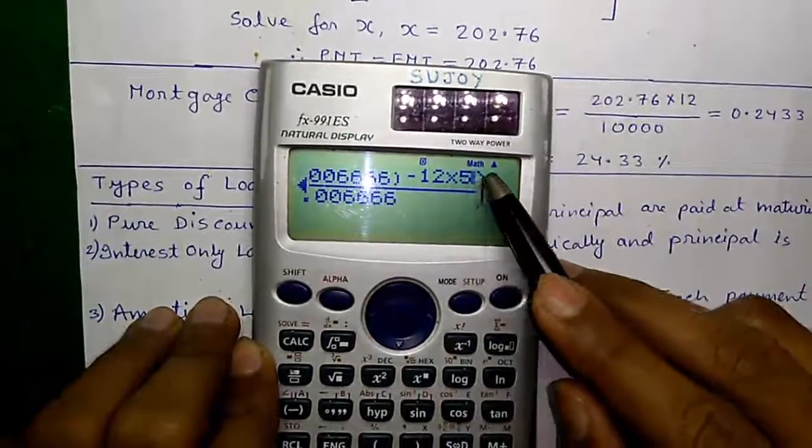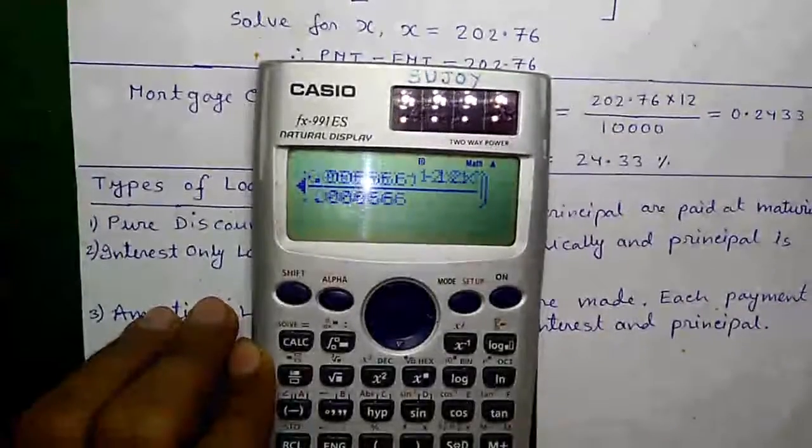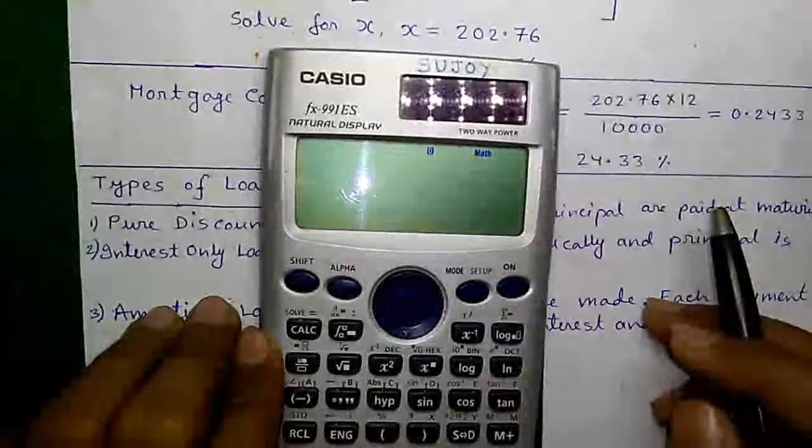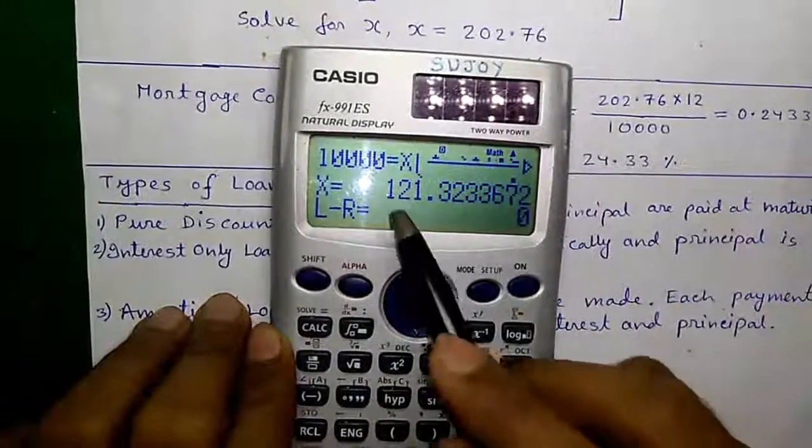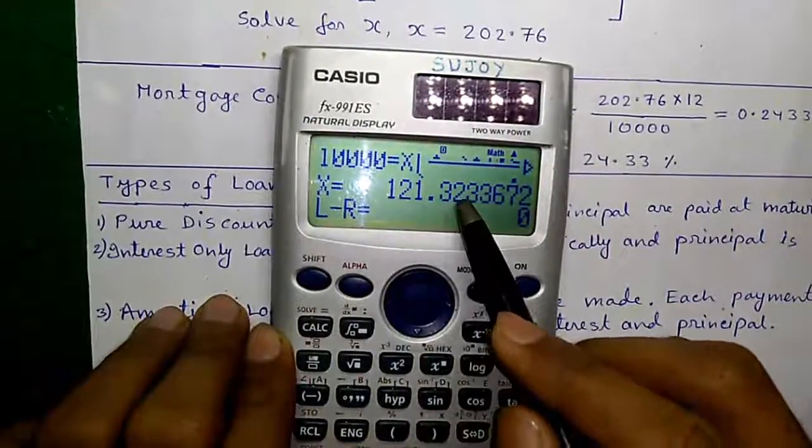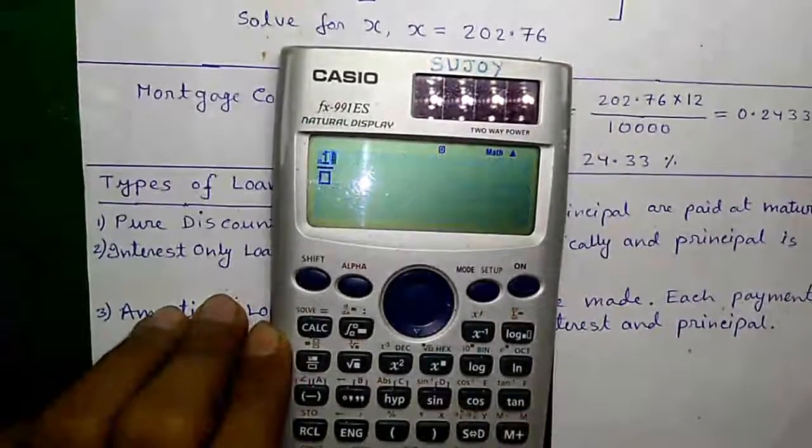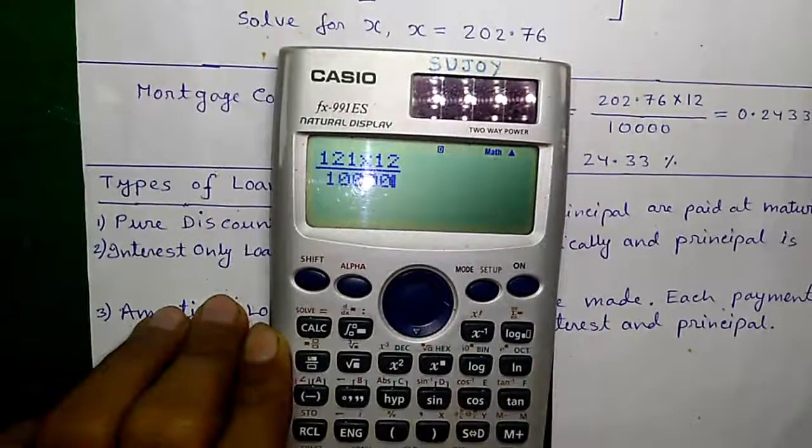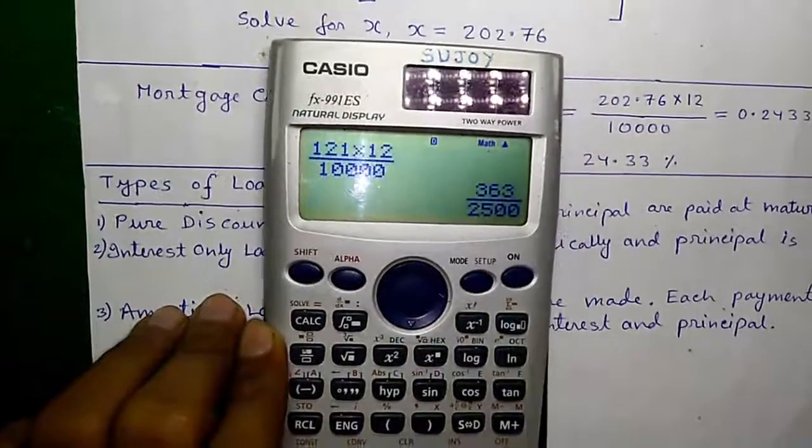If you increase the loan duration from 5 years to 10 years and recalculate, your monthly payment amount will reduce.